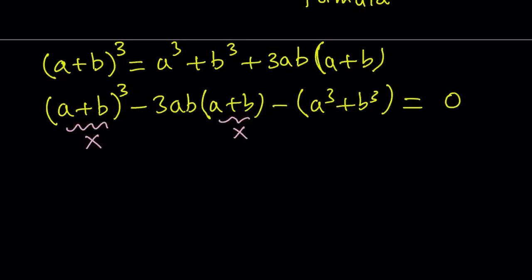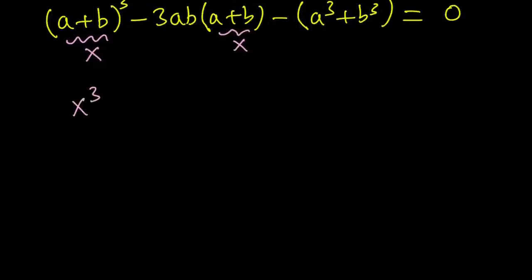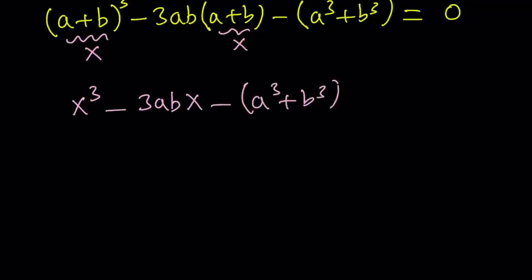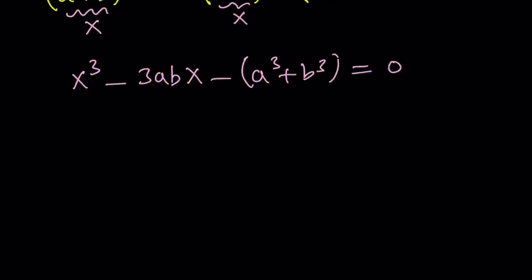And that gives us an interesting equation: x cubed minus 3abx minus the quantity a cubed plus b cubed equals 0. Now, this is a cubic equation in x. And, obviously, one of the solutions of this cubic is a plus b, because we said that x equals a plus b. So, it's one of the solutions. What about the other solutions? Can you find them? That's something to think about.